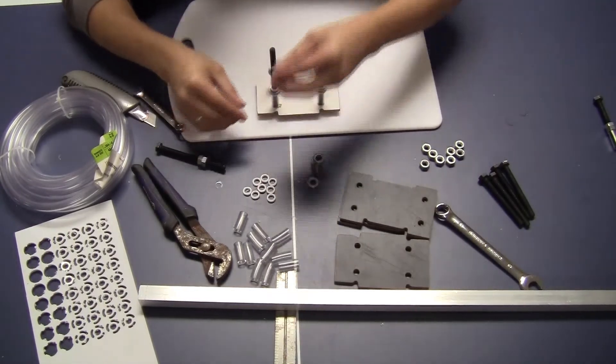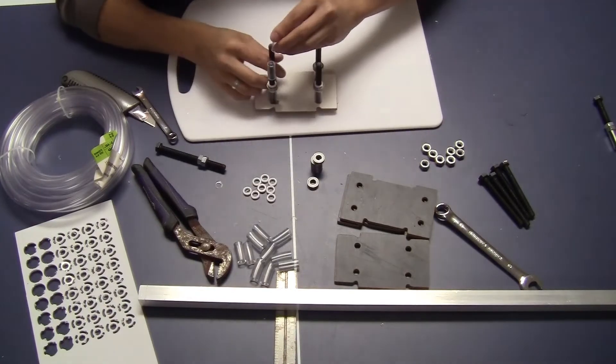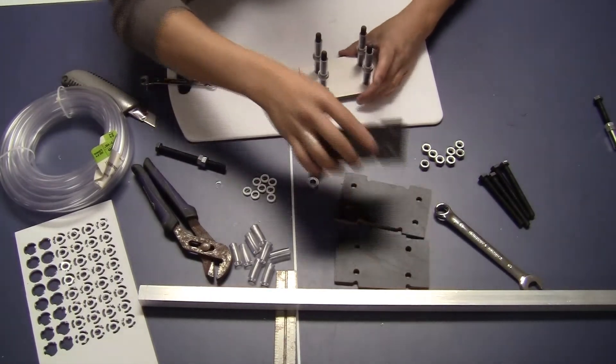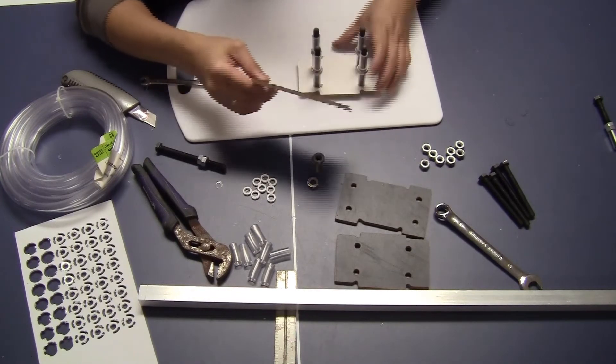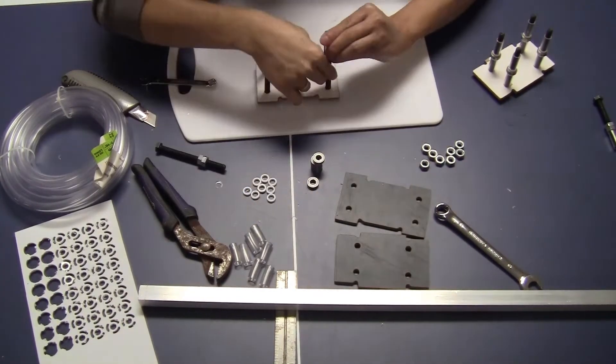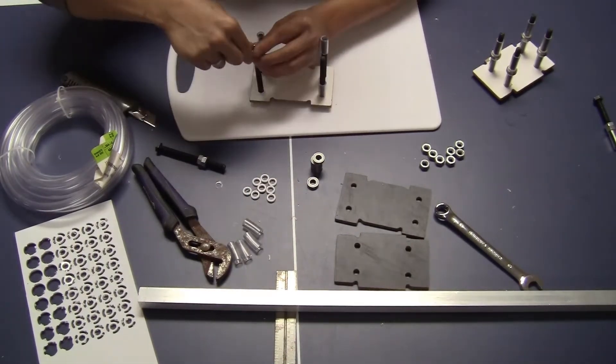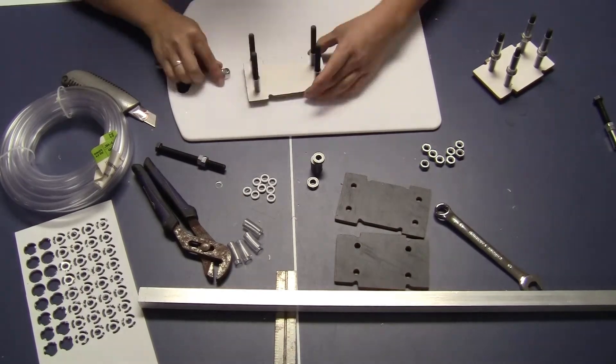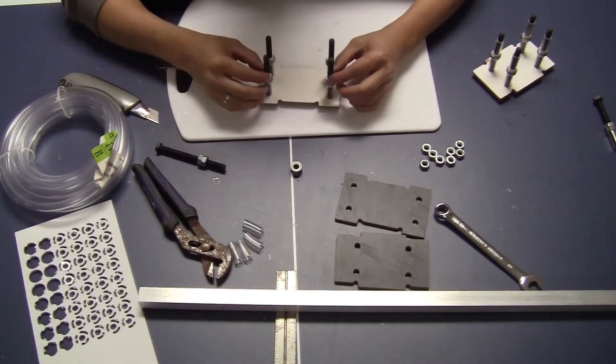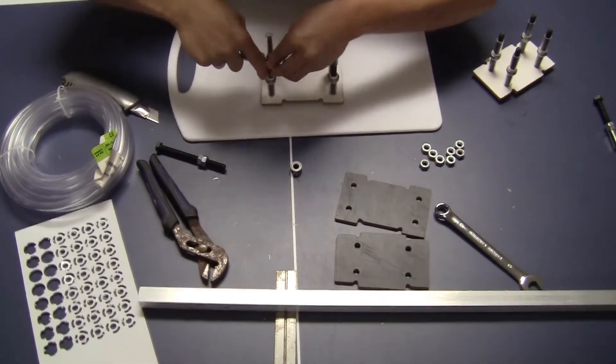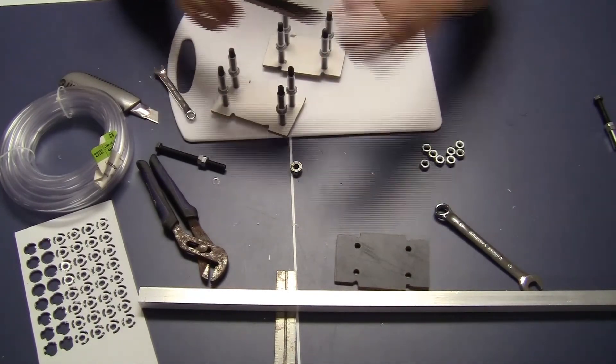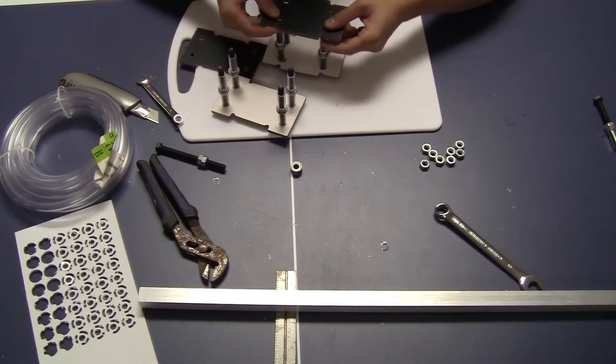Then another spacer on top. Slide the bolt through the same way for all four positions. Now slide in the second plate to complete the assembly.